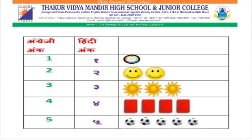The number 2 — counting 1, 2. In English there is 3, in Hindi it is ३ (teen). How do we count 1 to 3? In English there is 4, in Hindi it is ४ (char). How many in the picture? 1-2-3-4.